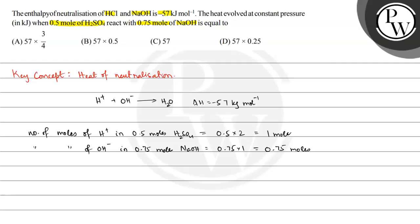Comparing the two, NaOH is the limiting reagent. So the reaction is H⁺ + OH⁻ → H₂O, and the amounts are determined by the limiting reagent. That is 0.75 moles of OH⁻ reacting with an equivalent 0.75 moles of H⁺ to give water.